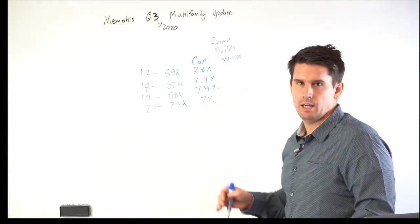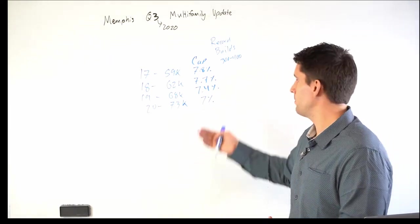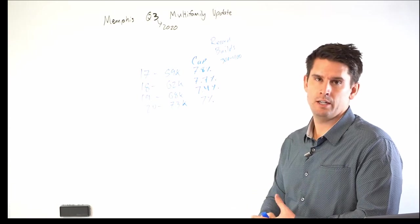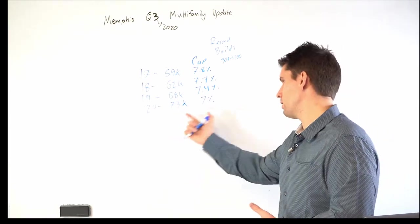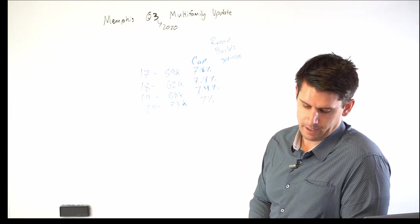That means investors are willing to take like a 7% return versus an 8%, showing their risk tolerance and their confidence in the market, and therefore showing that they're willing to pay a little bit more price per door to take a little bit of a less return, but they're feeling confident about the market and everything like that.